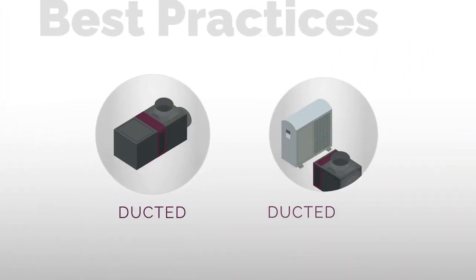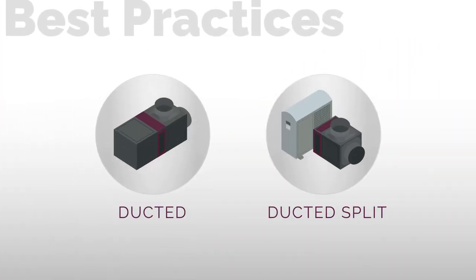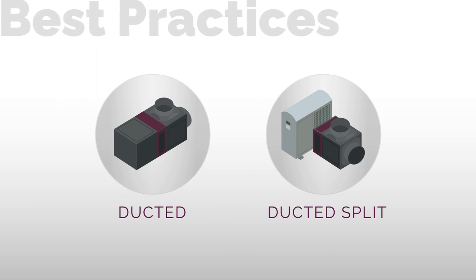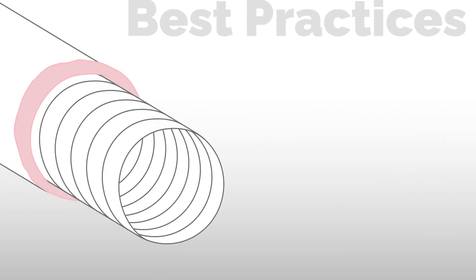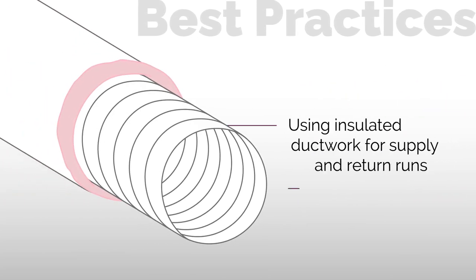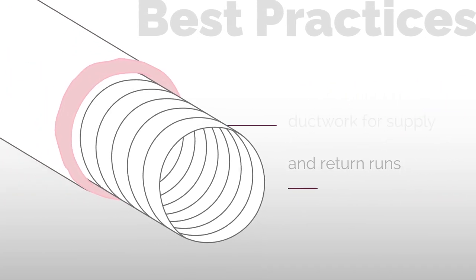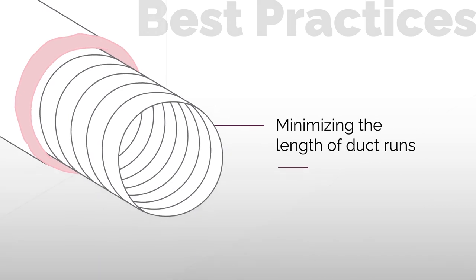For ducted and ducted split system installations, following several best practices can help you maximize cooling efficiency and temperature stability. This includes using insulated ductwork for supply and return runs, minimizing the length of duct runs where possible.